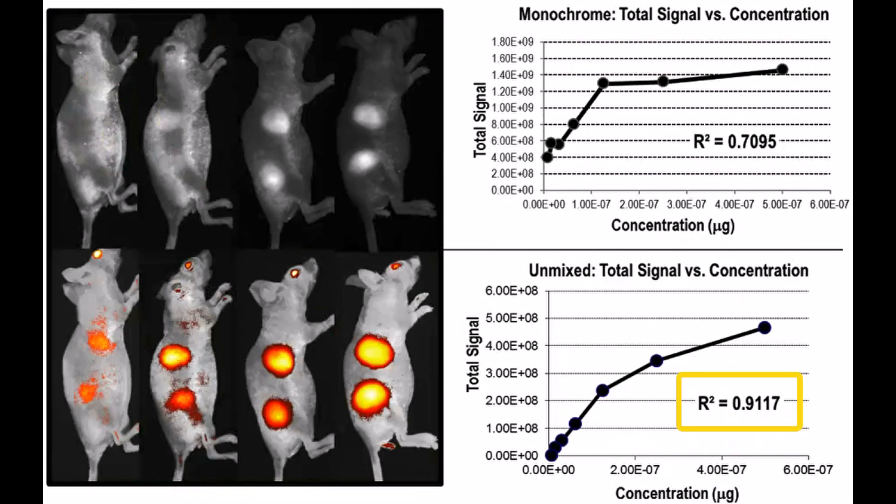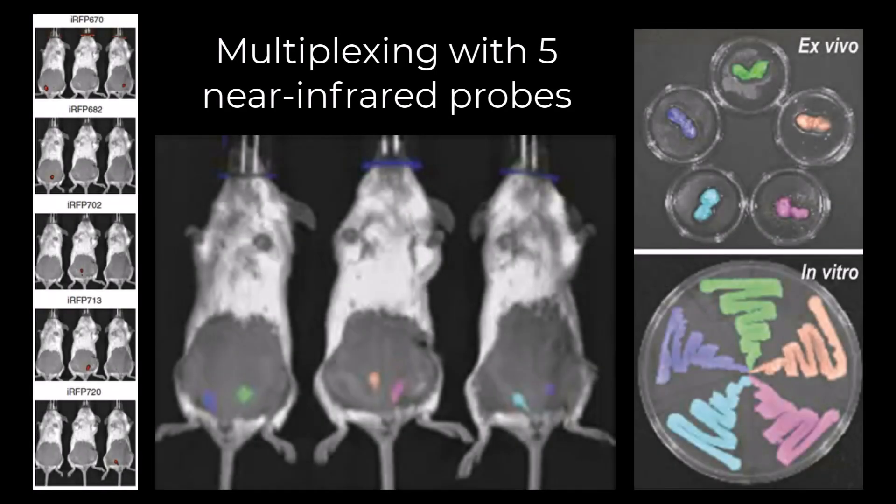Removal of background also improves quantitation. Here, probe concentration versus intensity is plotted. When the background is removed there is more linear correlation between concentration and probe intensity.